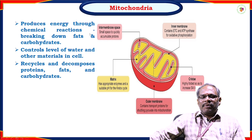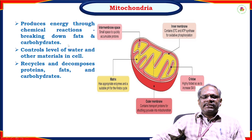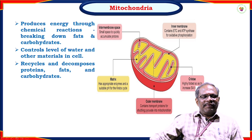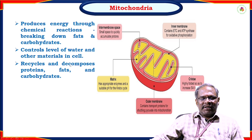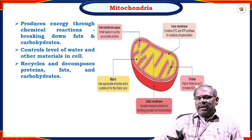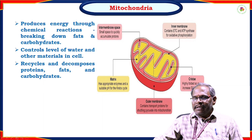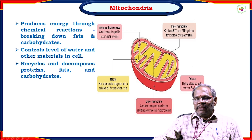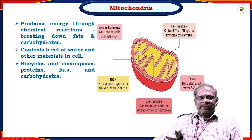Mitochondria: the other name of the mitochondria is the powerhouse of the cell because it generates energy. It produces energy in the form of ATP through chemical reactions, breaking down fats and carbohydrates, controls the level of water and other materials in the cell, and recycles and decomposes proteins, fats, and carbohydrates. The structure contains an outer membrane and an inner membrane. The inner membrane contains folded structures called cristae. The phase enclosed by the cristae is called the matrix, which contains appropriate enzymes and the suitable pH for the Krebs cycle.